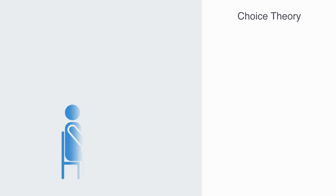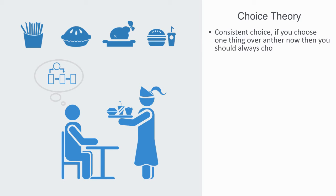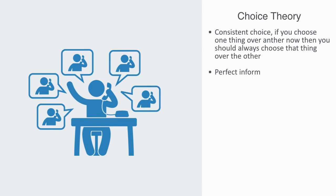Standard economics sees choice as an optimization algorithm over a set of well-defined options that remain unchanged by the context. This is based upon the idea of consistent choice. If you choose one thing over another now, then you should always choose that thing over the other, independent from other factors that are exogenous to this equation. When making choices,